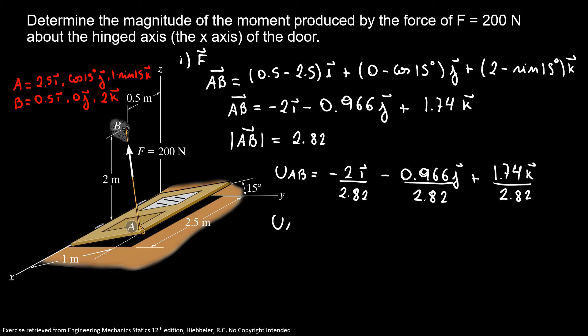So our unit vector AB is equal to minus 0.709I minus 0.342J plus 0.617K. Now our vector form F is equal to 200 times the unit vector AB. So our vector form of F is equal to minus 142I minus 68.4J plus 123K. So here is our first step. We found our Cartesian form.